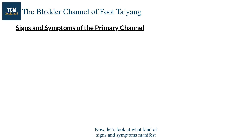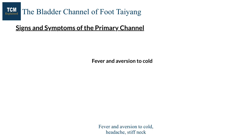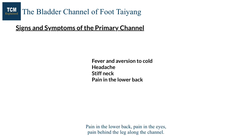Now let's look at what kind of signs and symptoms manifest when there is a problem with the bladder primary channel. These include fever and aversion to cold, headache, stiff neck, pain in the lower back, pain in the eyes, and pain behind the leg along the channel.